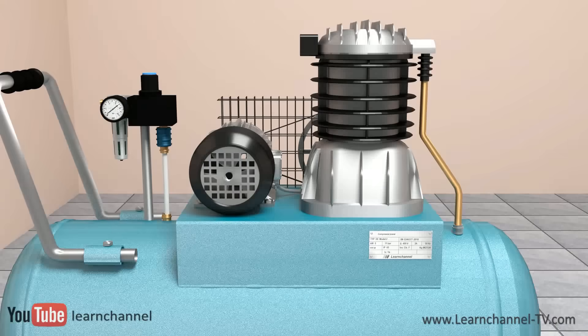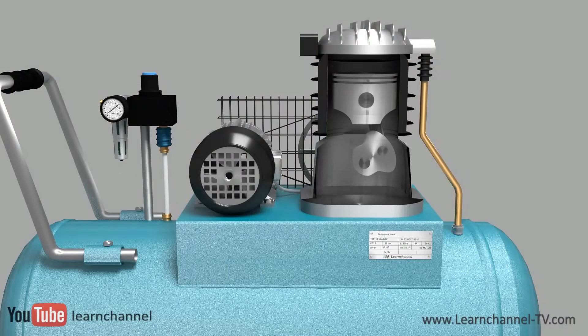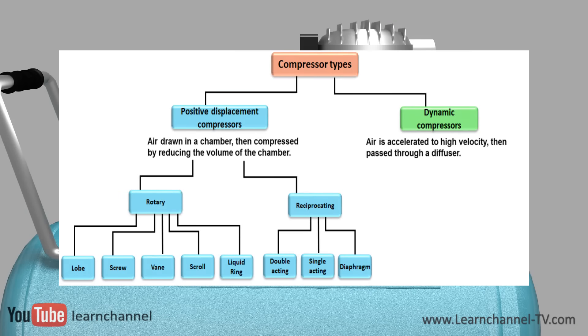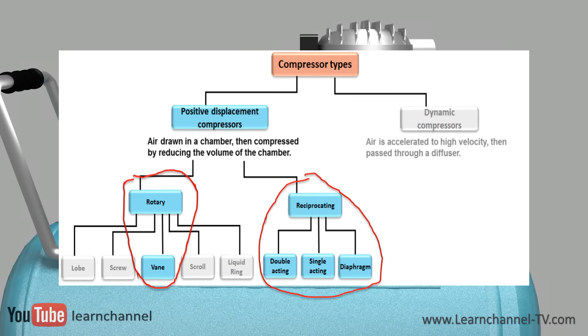There exists a variety of different compressor types. Let's continue with an overview. Normally, the compressors used in the field of automation and workshops are the so-called positive displacement compressors. Here, pressure is exerted when air is drawn in a chamber and the volume of this chamber is reduced. In this video, we want to confine ourselves to this type of compressors.